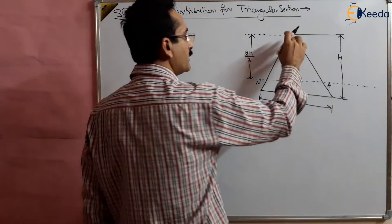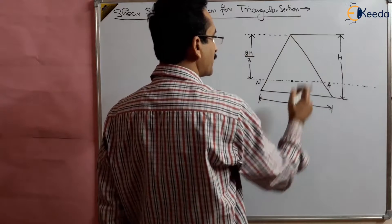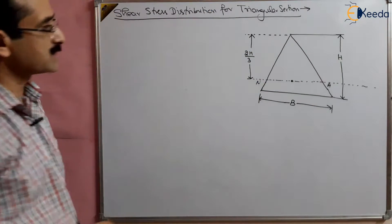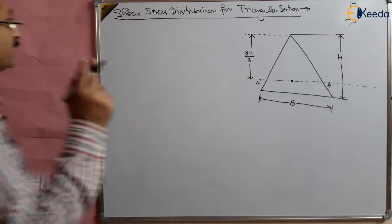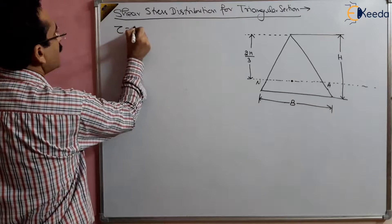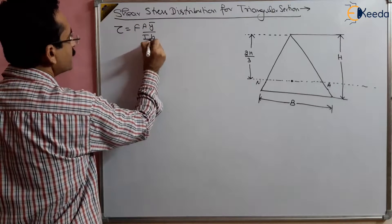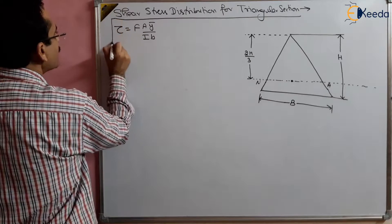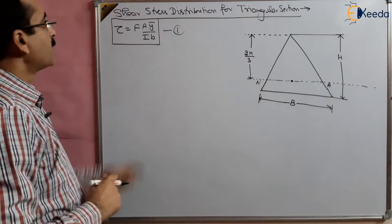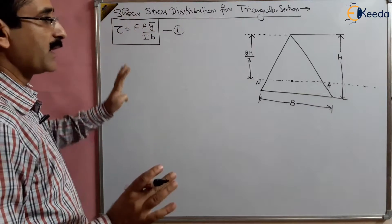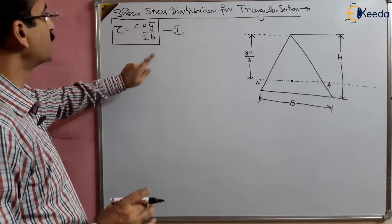We have to draw the shear stress distribution diagram from the outer fibers, both outer fibers in between. The formula is: tau equals F·A·ȳ divided by I·b. In this case, A·ȳ is variable as it is always variable during the derivation, and b is also variable.